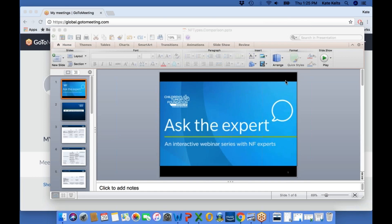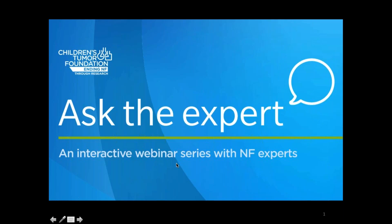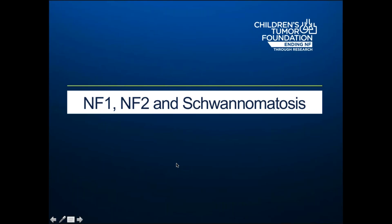Today, we will be discussing the differences between the three types of NF: NF1, NF2, and schwannomatosis. This information was developed by Heather Radke, the NF Clinic Network Coordinator for the Children's Tumor Foundation, in cooperation with Pam Knight, our Director of Clinical Programs. It was also reviewed and approved by a member of our Medical Advisory Board. The information provided is meant to be a primer and is certainly not comprehensive — the aim being a basic understanding of the differences between these three different but related conditions.